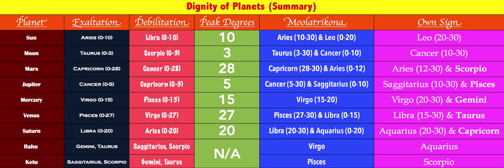Mars's own moolatrikona sign is 0 to 12 degrees of Aries, and the remaining part of Aries 12–30 and the entire sign of Scorpio are considered its own sign. Jupiter reaches peak exaltation in 0 to 5 degrees of Cancer in the nakshatra of Pushya, first pada — a beautiful placement, the planet of spirituality in the sign of emotions. It gets debilitated in Capricorn 0–5 degrees. Cancer 5–30 is moolatrikona, and Sagittarius 0–10 is its own moolatrikona sign; Sagittarius 10–30 and all of Pisces are own sign.